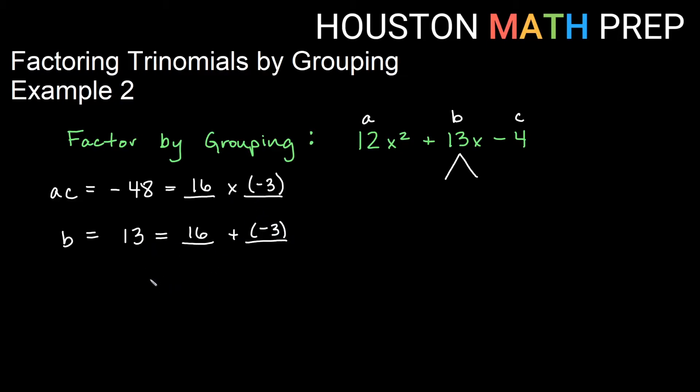So either of these numbers in either order 16 and negative 3 are what we will use to group the middle term. So we will keep the first term. I will use 16 and negative 3 to regroup my x term so it needs to stay like terms to what it was to begin with. So we have 16x and minus 3x which is still 13x total just broken up into two pieces keep the minus 4 on the end.